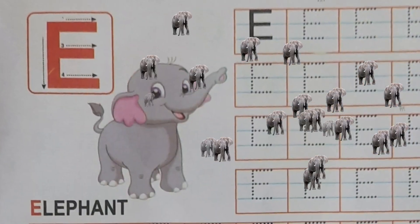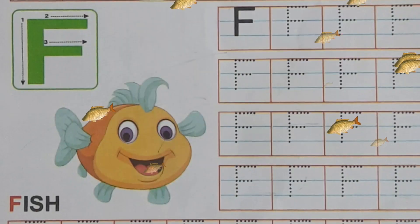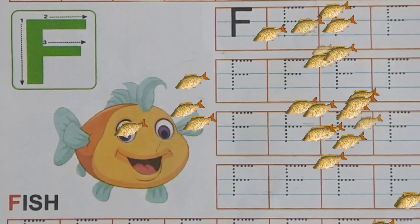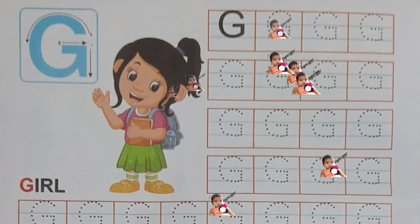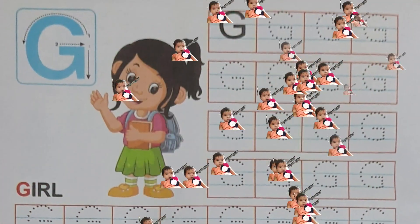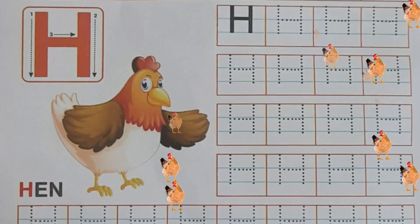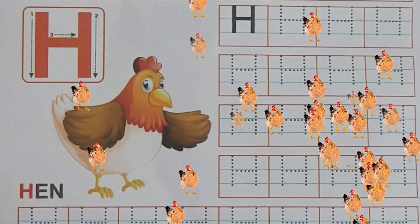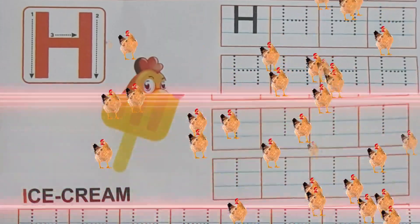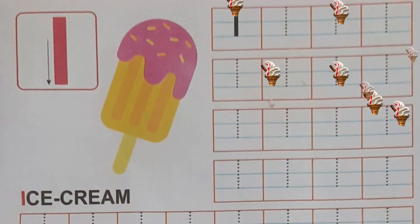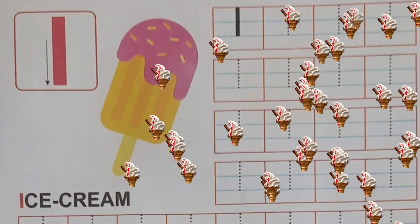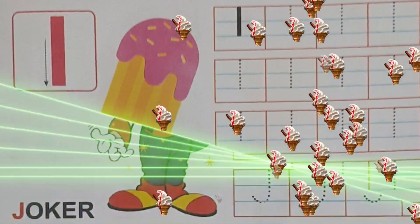E for Elephant, F for Fish, G for Girl, H for Hat, I for Ice Cream.